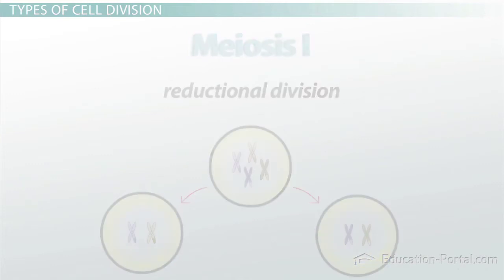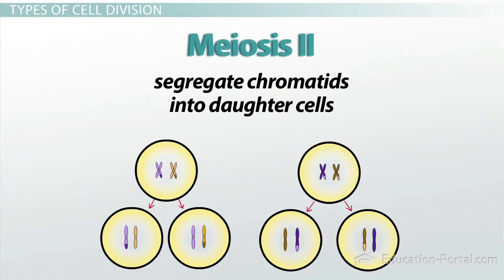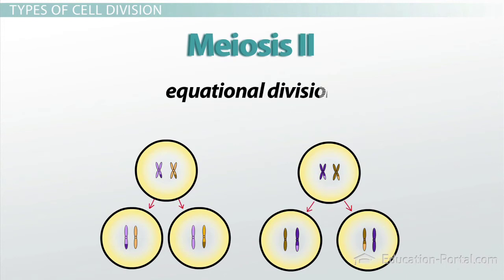In contrast, meiosis II is very similar to mitosis, since the goal is to segregate a chromatid of each chromosome into separate daughter cells. For this reason, meiosis II is sometimes called an equational division.